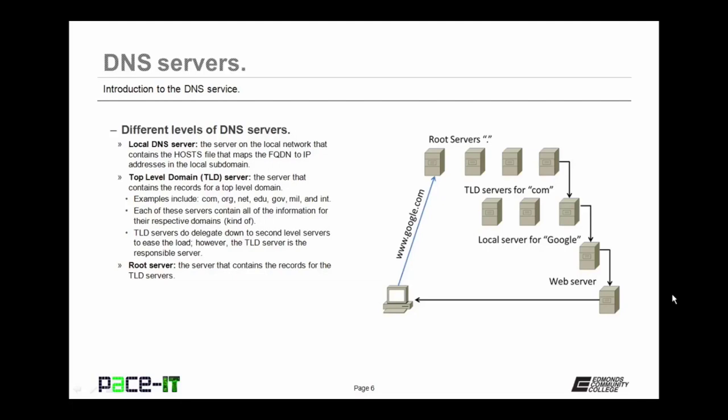Then there are top level domain servers — the TLD servers. These are the servers that contain the records for top level domains. Examples of top level domains are .com, .org, .net, .edu, and so on. Each of these servers contains all of their information for their respective domains — though TLD servers do delegate down to second level servers to ease the load so that the TLD server is not overloaded.